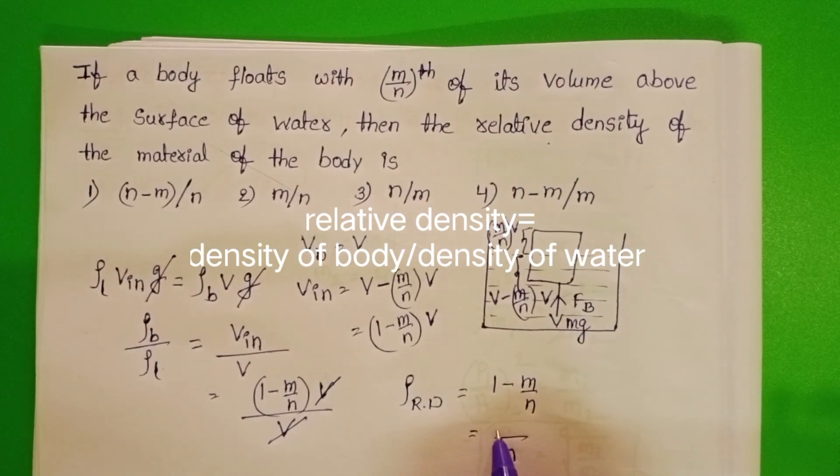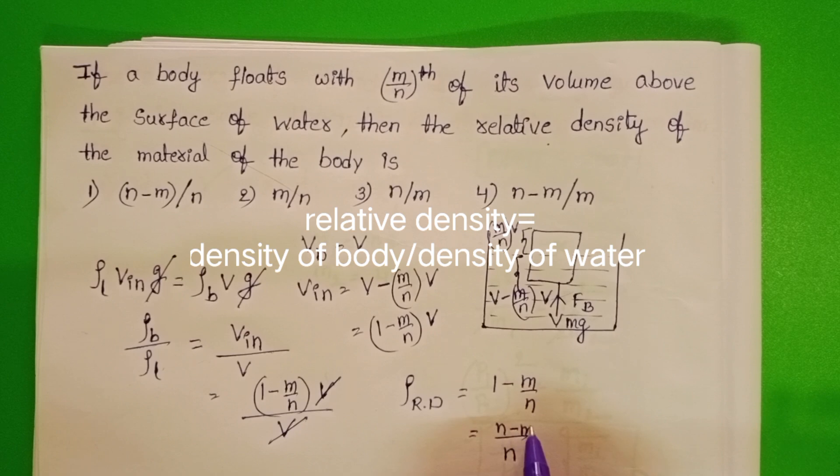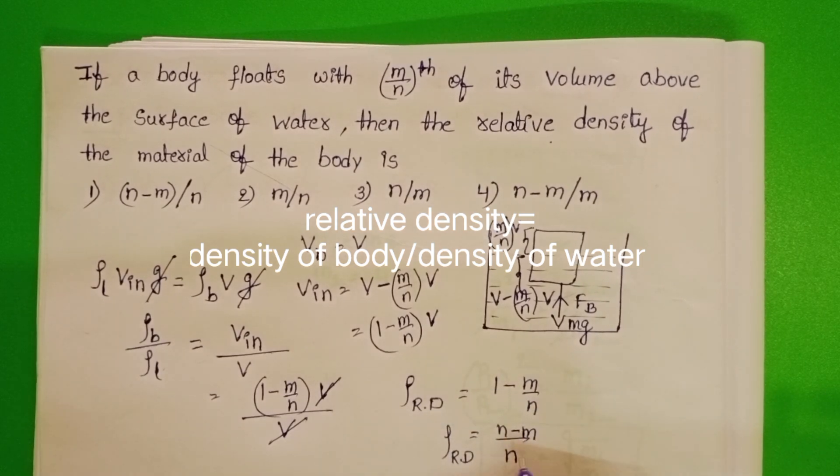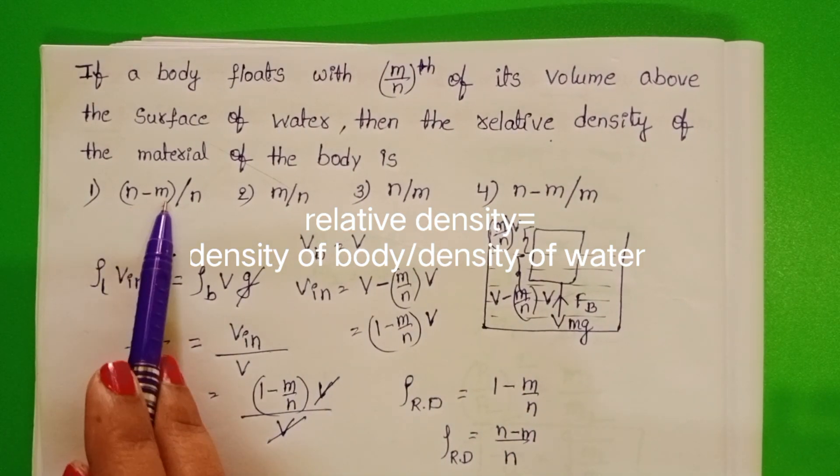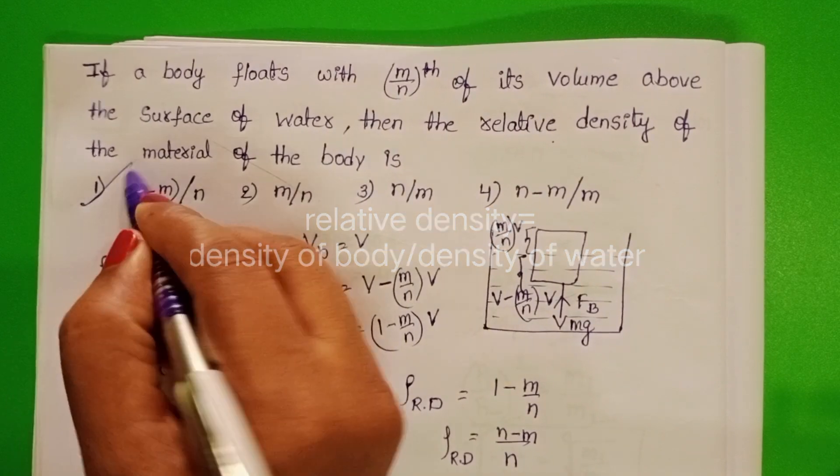Take LCM, n. In numerator, n minus m. Relative density equals n minus m by n. First option is correct.